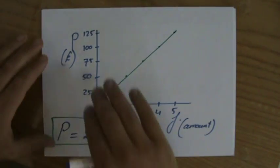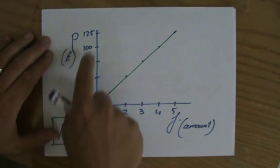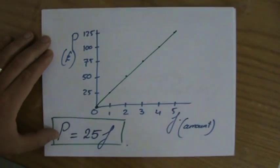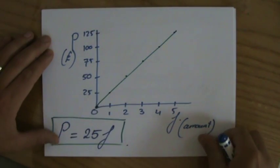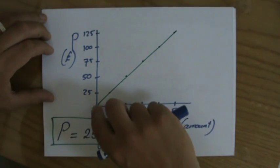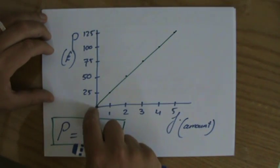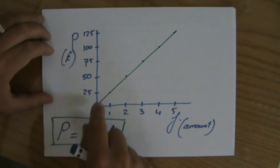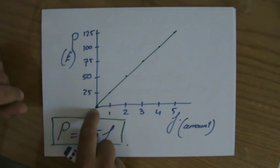I've shown you this graph in the previous video as well. With direct proportion, if P is directly proportional to f, then your graphical representation of that situation is a linear equation going through the origin, because if I buy zero footballs I pay zero pounds.